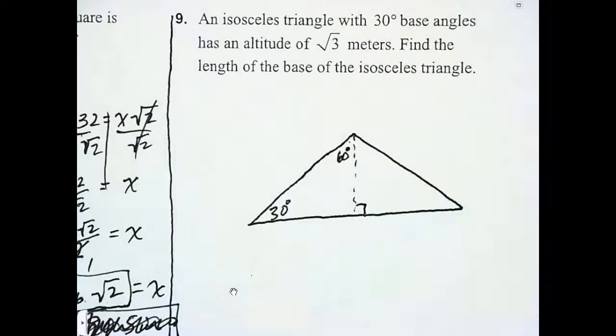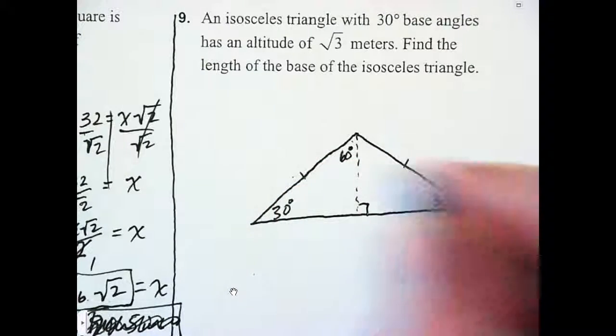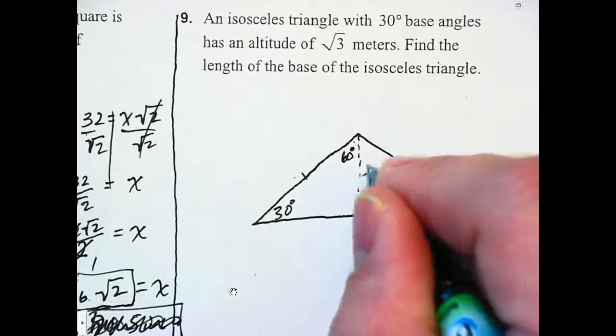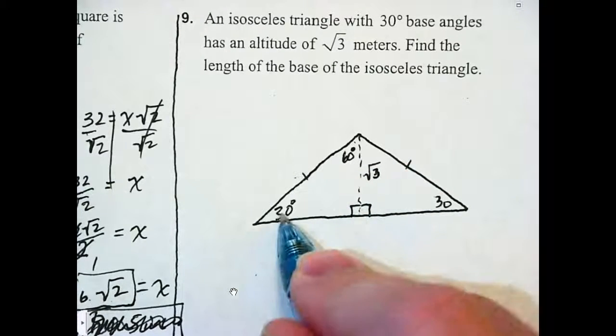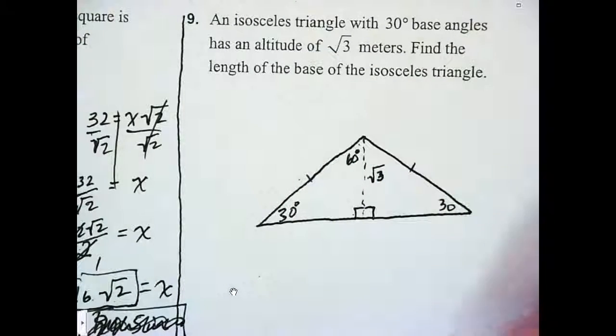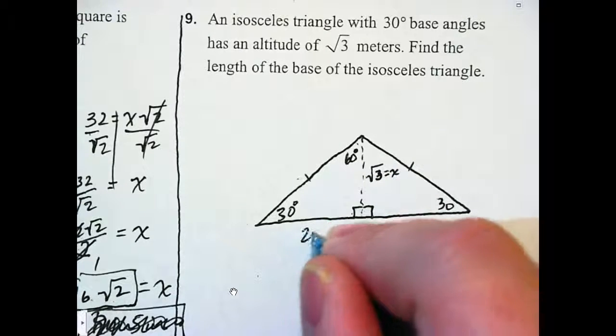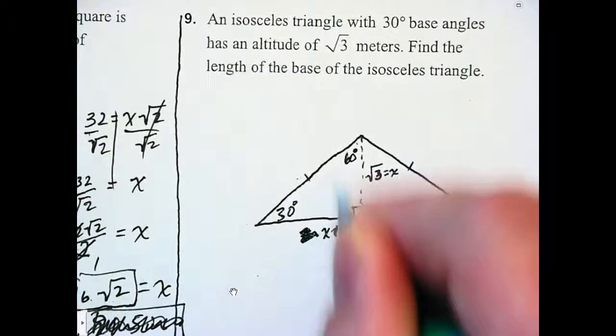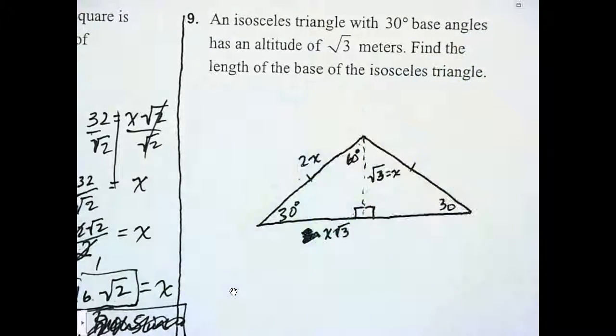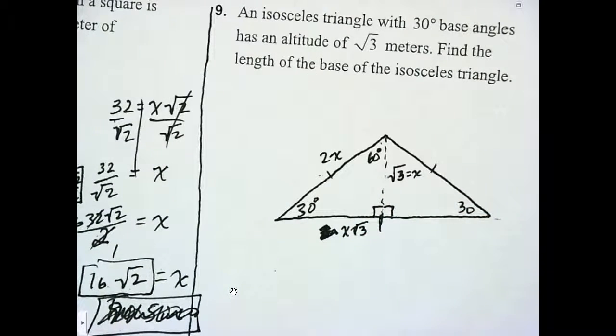Okay. An isosceles triangle with a base angle of 30 has an altitude of root 3. Isosceles means that is congruent to that. Notice I dropped an altitude here. That's root 3. When I drop an altitude, that gives me a 90 degree angle here, which means 30, 90, and 60. It's obviously not to scale. Find the length of the base. So, this length.